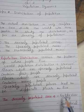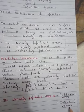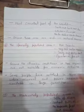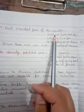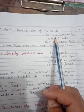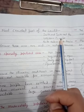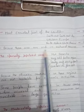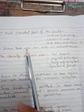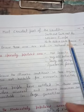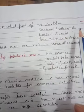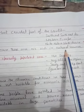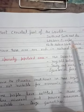Densely populated areas are the fertile river valleys and industrial regions. Starting with the most crowded parts of the world: South and South East Asia, Western Europe, and North Eastern North America. These areas are rich in natural resources. Because these areas are rich in natural resources, that is why there is so much population here.